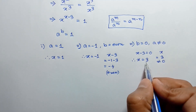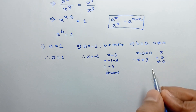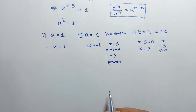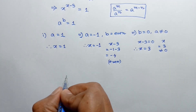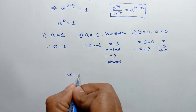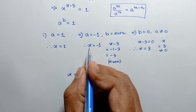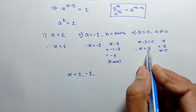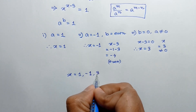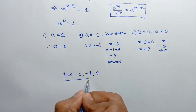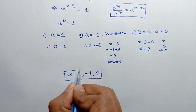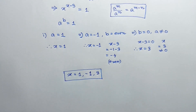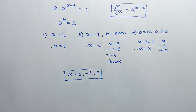So x is equal to three is another solution of this equation. So we have found x is equal to one, x is equal to negative one, and x is equal to three as the solutions of this equation. If you like this video, please subscribe to my channel. Thanks for watching.